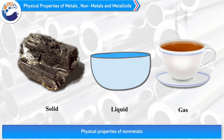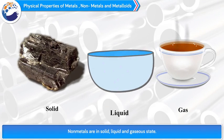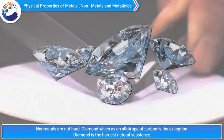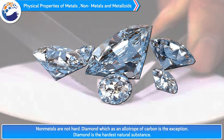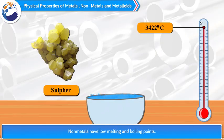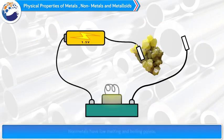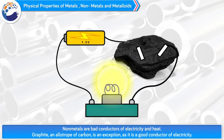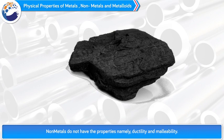Physical properties of non-metals. 1. Non-metals are in solid, liquid and gaseous state. 2. Non-metals do not possess luster, but iodine is the exception as its crystals are shiny. 3. Non-metals are not hard. Diamond, which is an allotrope of carbon, is the exception — diamond is the hardest natural substance. 4. Non-metals have low melting and boiling points. 5. Non-metals are bad conductors of electricity and heat. Graphite, an allotrope of carbon, is an exception as it is a good conductor of electricity. 6. Non-metals do not have the properties namely ductility and malleability.